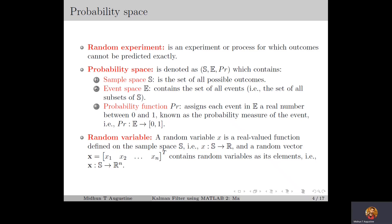Similarly, for rolling a dice, the outcomes are the six faces of the dice, which are numbered from one to six. So at each time when we roll a dice, we may get either one of the six outcomes and we cannot exactly predict which one we will get.